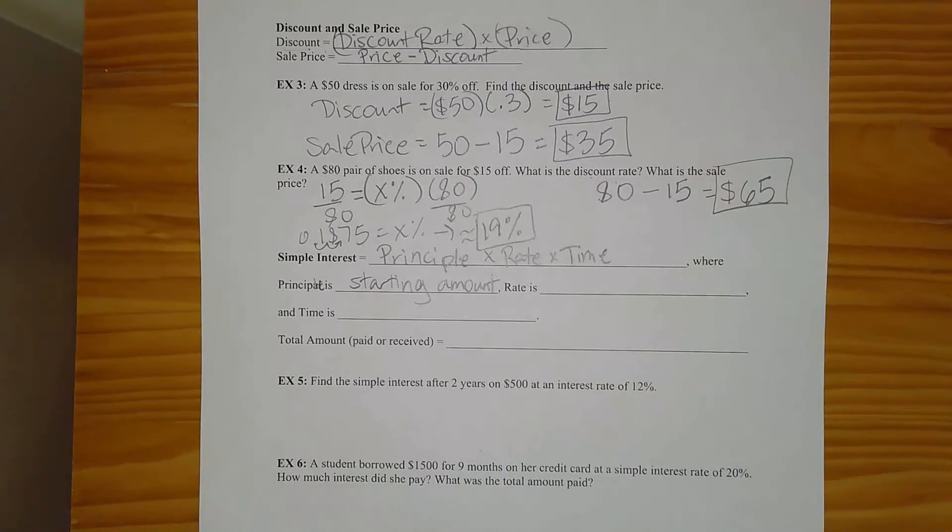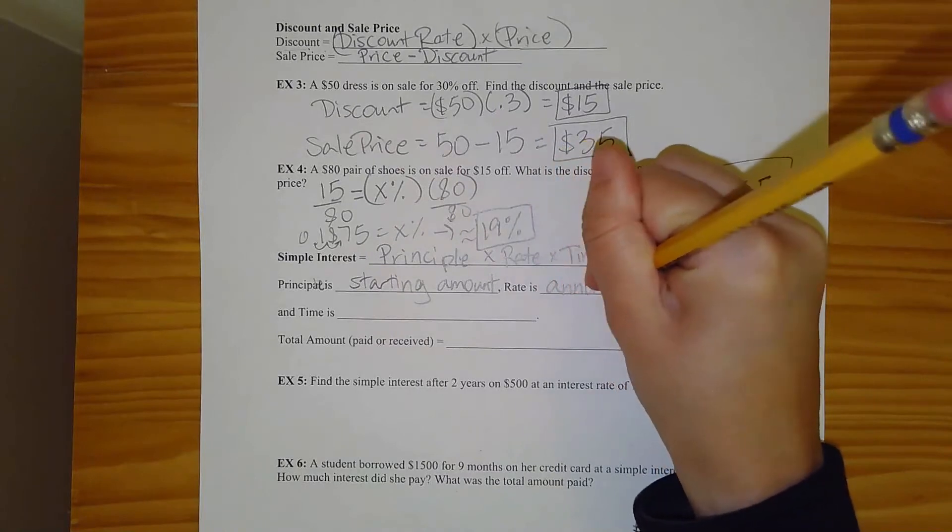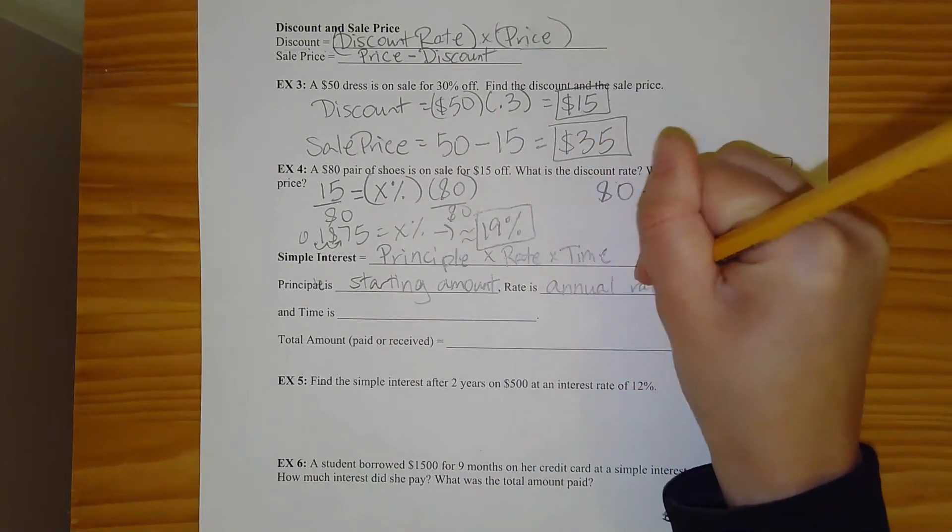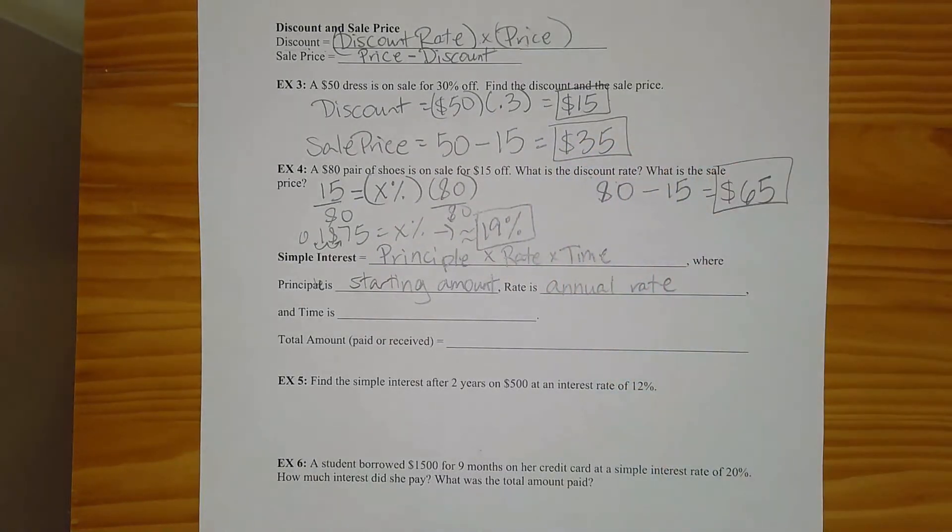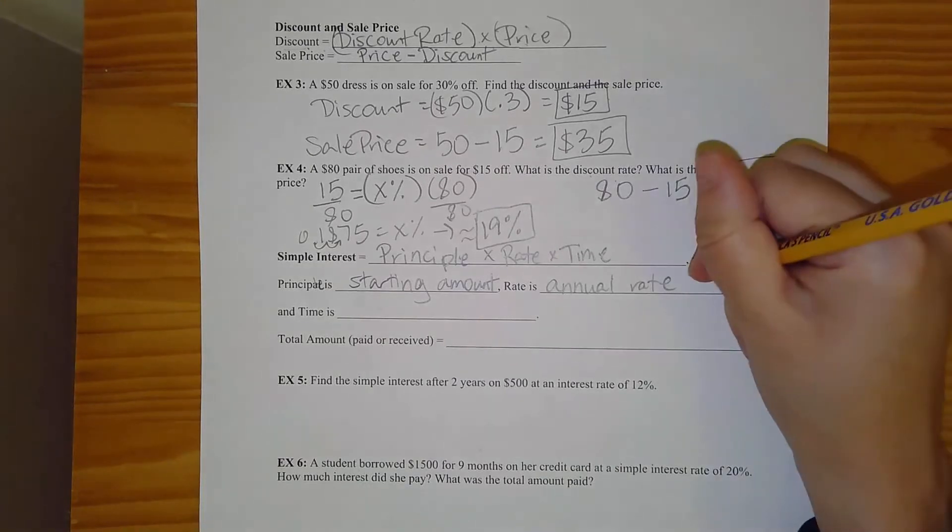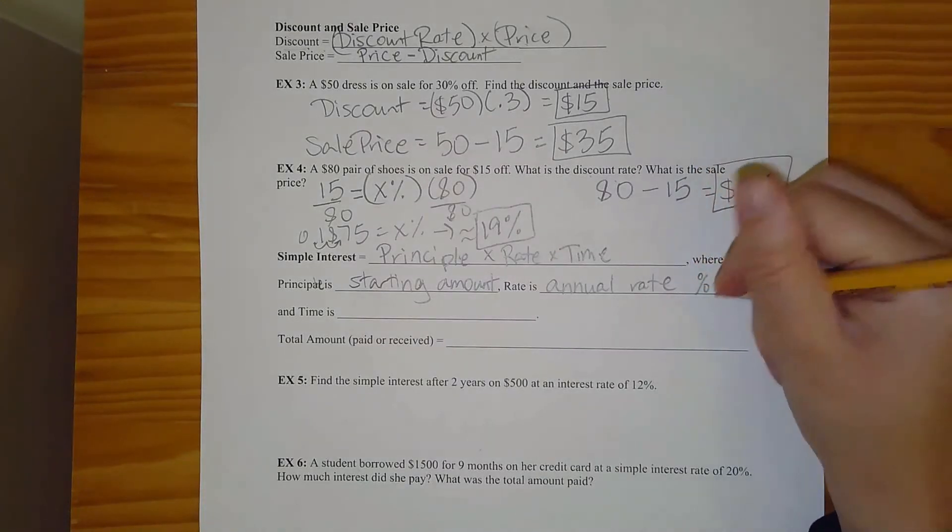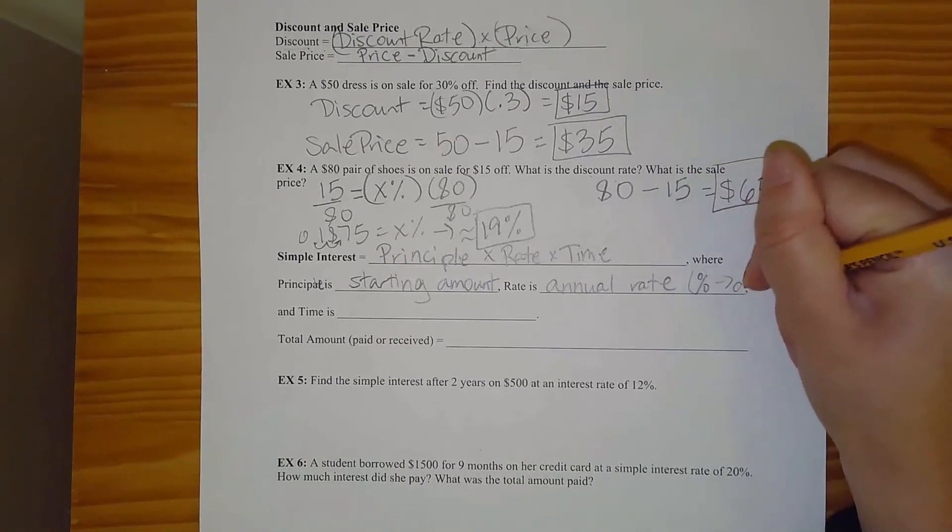The rate, unless they tell you otherwise, is going to be an annual rate. So that means that that's the amount over a year. That's going to include your interest. As well, rates are going to be in percents. Don't forget to convert from a percent to a decimal.